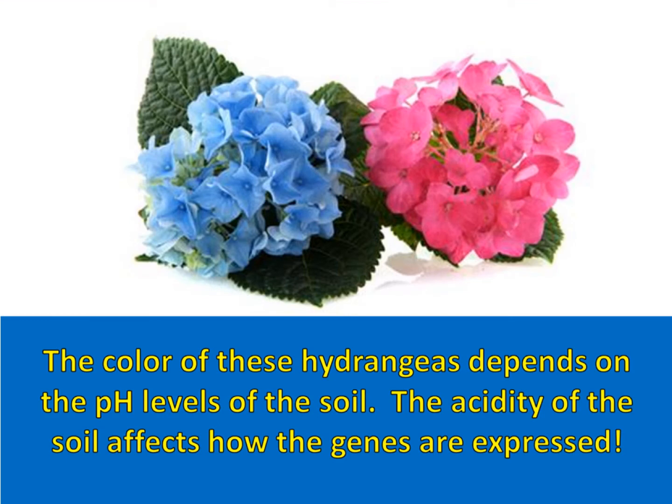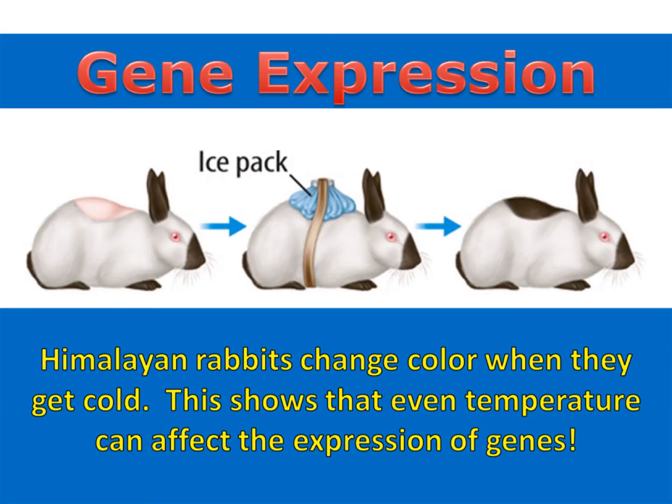There are actually many ways that the environment can affect the expression of genes. The color of these hydrangeas depends on the pH levels of the soil — the acidity of the soil affects how the genes are expressed. Himalayan rabbits change color when they get cold, showing that even temperature can affect the expression of genes.